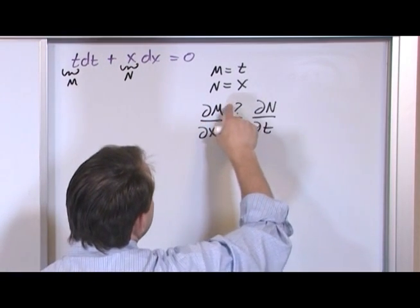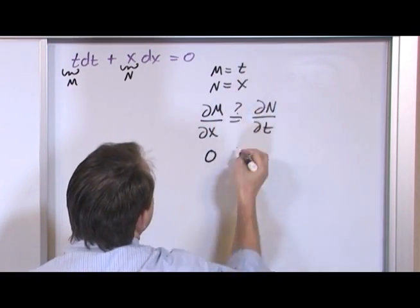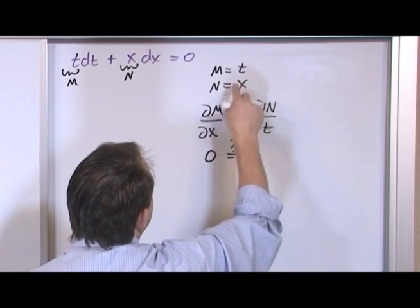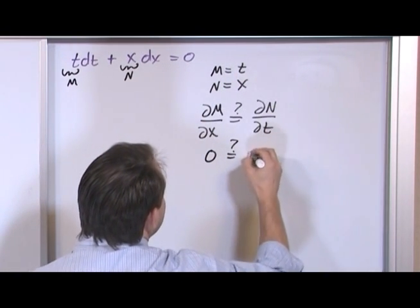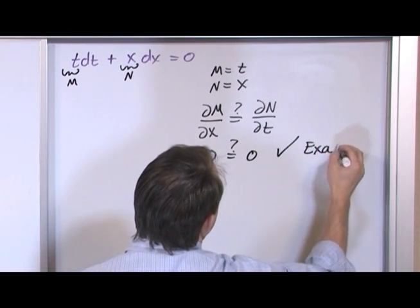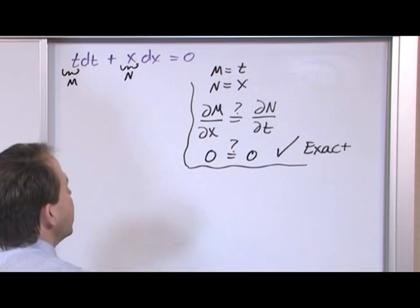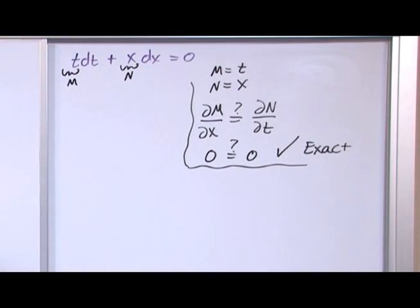So what is partial m with respect to x? That's zero because there's no x in here at all. What is the partial of this with respect to t? Well, that's also zero. So yes, it is exact. So what this means is, because it's exact, is we will be able to find that master function f that satisfies everything else.